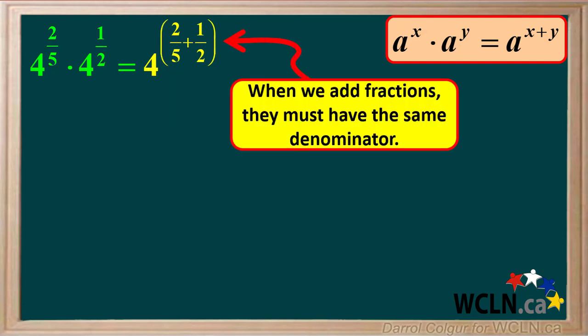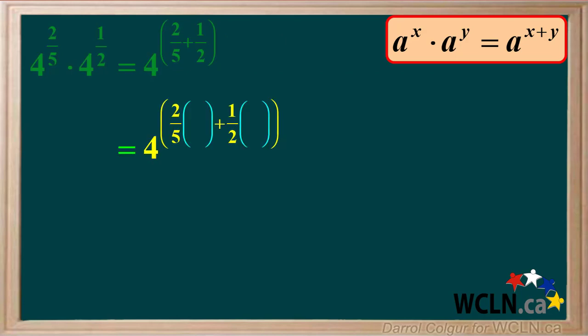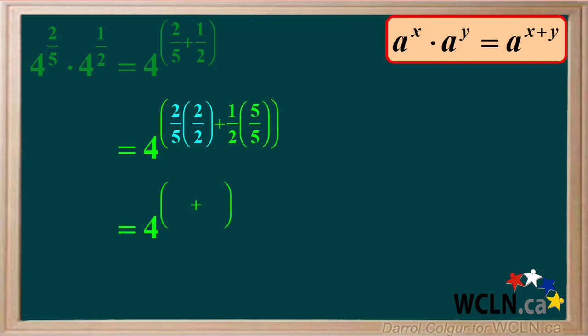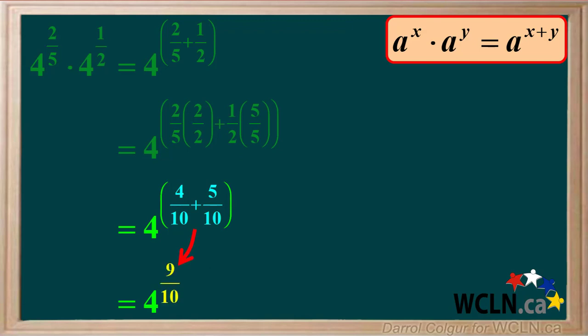But remember, when we add fractions, they must have the same denominator. We multiply 2 fifths by 2 over 2 and 1 half by 5 over 5, so we can get a common denominator of 10. 2 over 5 times 2 over 2 equals 4 over 10, and 1 over 2 times 5 over 5 equals 5 over 10. 4 over 10 plus 5 over 10 equals 9 over 10.